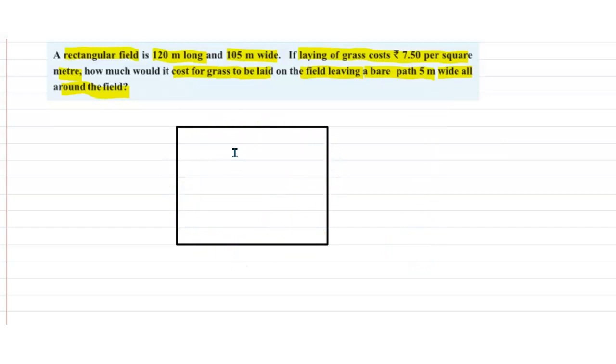Now, we have to lay grass on this field, but we have to leave a path inside it only. We have to leave a path without grass so that people can move over there.